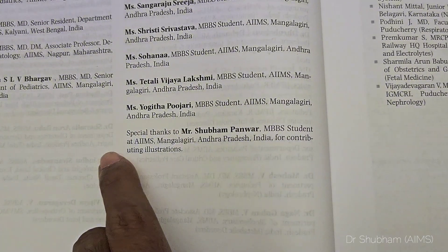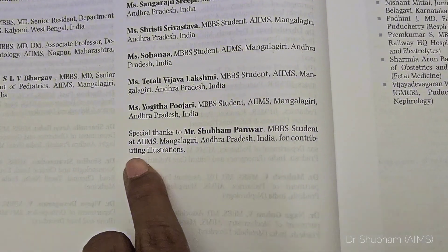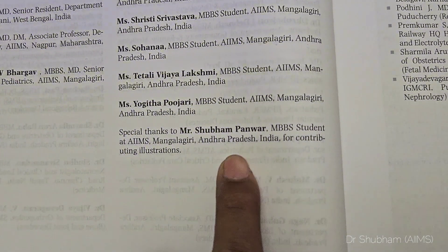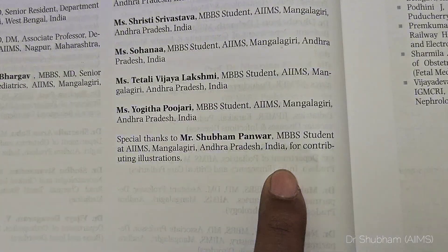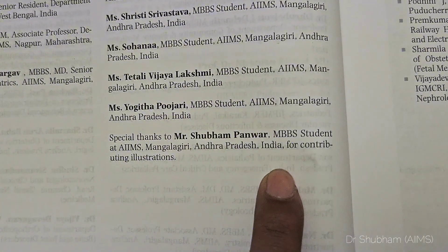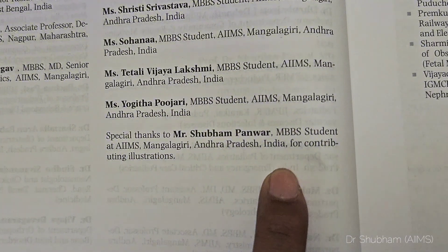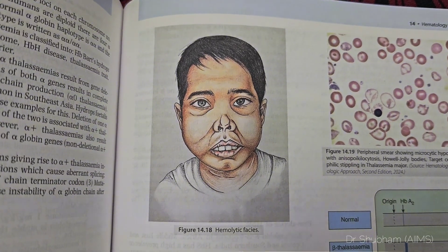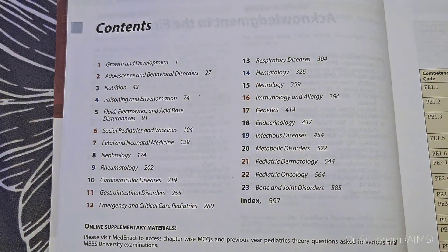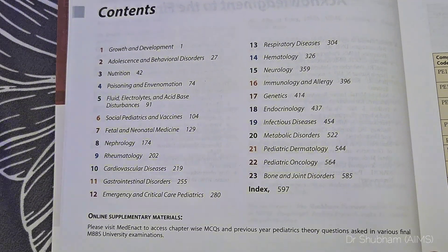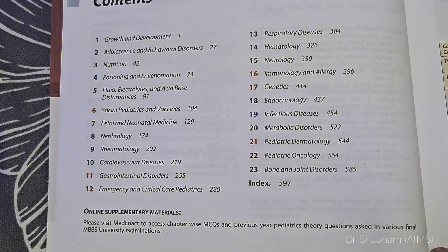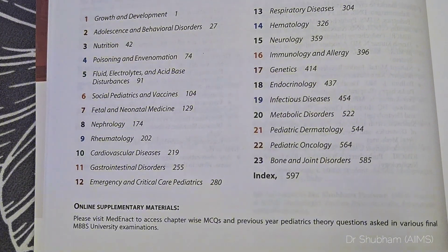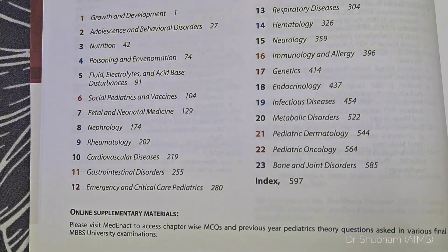Many people have contributed in the making of this book. You can see my name also, as I have contributed by making diagrams for this book. This is one of the diagrams made by me. Starting from growth and development to bone and joint disorders, it covers all the topics.